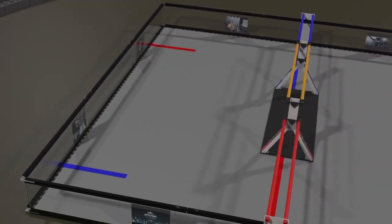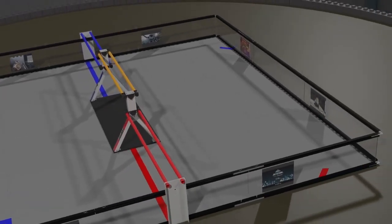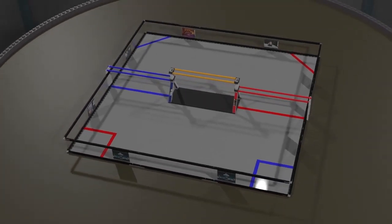Red and blue depots are taped off in the loading zone corners. Red and blue building sites are taped off in the building zone corners. Outside of the field walls are the alliance stations and human player stations.